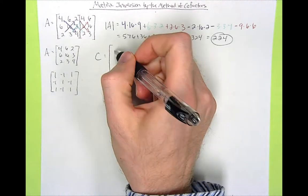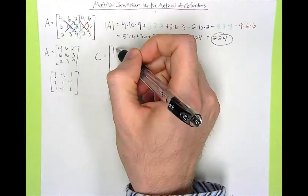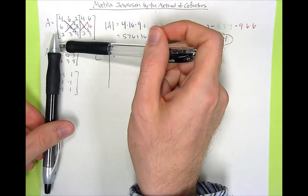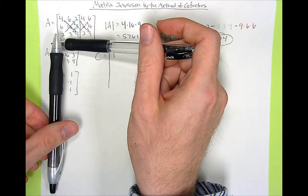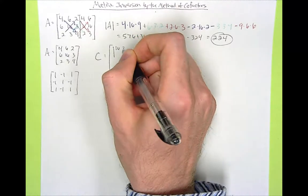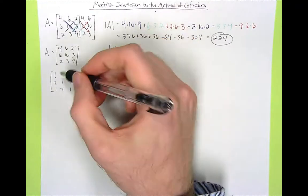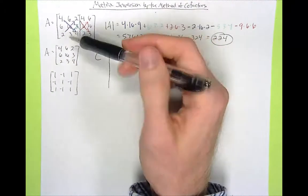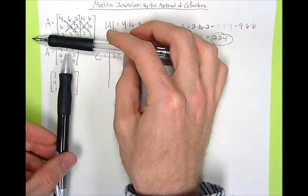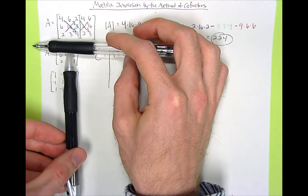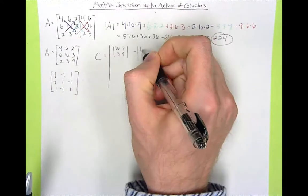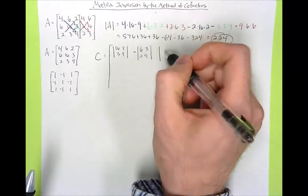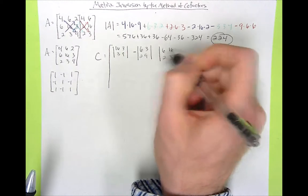Our first cofactor is the cofactor of 4, which is our first element. Since 4 is in the first row and first column, we block that row and column out and we're left with the 2×2 submatrix: 16, 3, 3, 9. The next cofactor has a negative sign since it's multiplied by negative 1. For the 6 in the first row, second column, we're left with 6, 3, 2, 9. For the third element we're left with 6, 16, 2, 3, multiplied by 1.